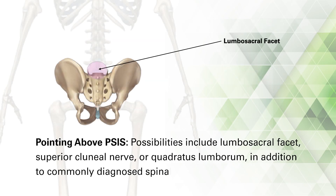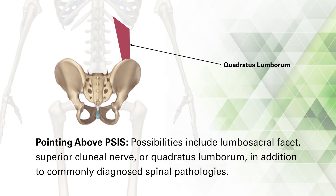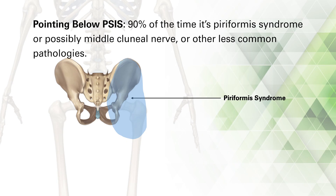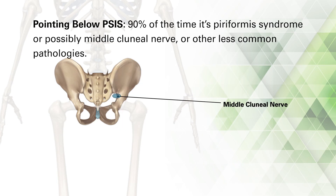If they point above the PSIS then I'm thinking it could be lumbosacral facet, superior clunial nerve, or quadratus lumborum, in addition to the other commonly diagnosed spinal pathologies. If they point below the PSIS then ninety percent of the time it's piriformis syndrome. This area could also be the middle clunial nerve or other less common sources of pain. Unless you consider all of these options, you may offer treatment that doesn't address the true problem, and the patient won't get better — it's really that we shot at the wrong target.